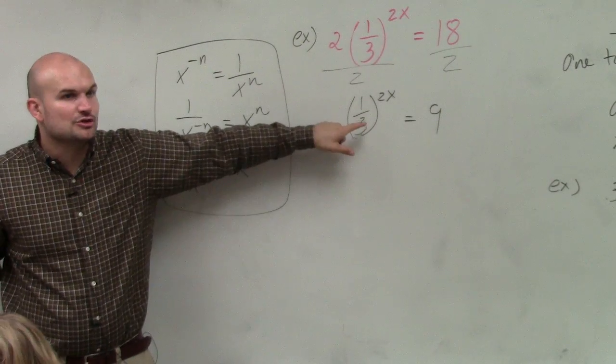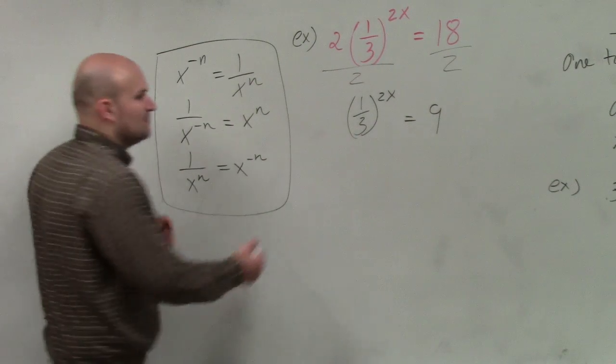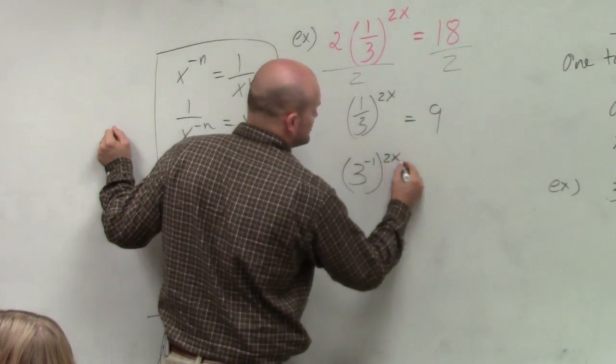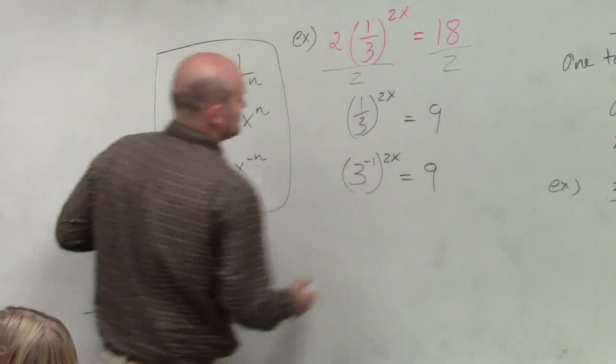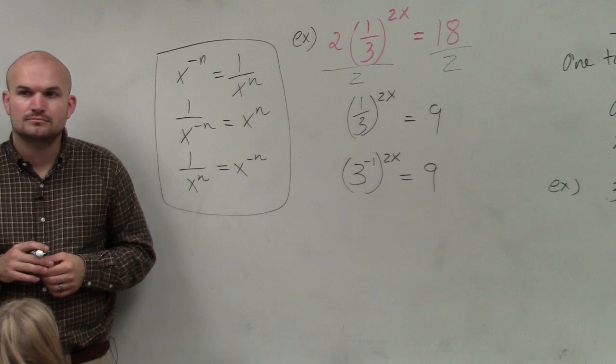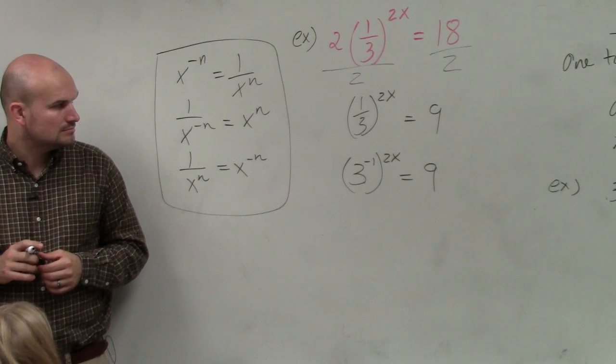So what I'm trying to say, if I want to rewrite this in the numerator, I'm going to have to use a negative exponent or negative power. So therefore, I rewrite this as 3 to the negative first, to the 2x, equals 9. Student asks: But could you multiply 1/3 by its reciprocal and have 1 to the 2x plus 2x as a power?